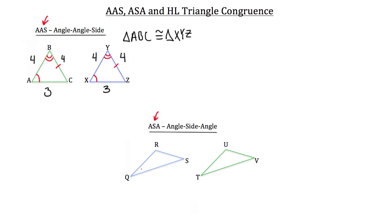Let's say angle Q on the blue triangle is congruent to angle T on the green triangle, and angle R is congruent to angle U. For the angle side angle postulate to work, the side that's congruent must be the side between those two angles. The only side between those two angles is side QR on the blue triangle and side TU on the green triangle. Once you've proven an angle side angle relationship between two triangles, you've proven them congruent.